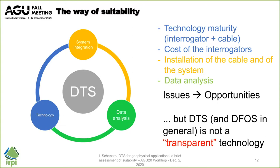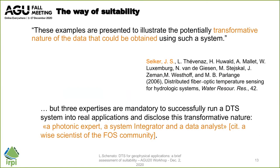Nonetheless, one thing has to be clear. DTS, like most distributed fiber optic sensing systems, is not a transparent technology like single-point fiber optic sensor technology. You cannot replace a standard temperature sensing system with a DTS without the user having to adapt and change their way of performing measurements and analyzing data. This is because the nature of the data that people can collect with a DTS is transformative, as originally highlighted by Professor Selker. To disclose this potential, you need three expertises that work together synergistically: a proponent expert, a system integrator, and a data analyst. Thank you.